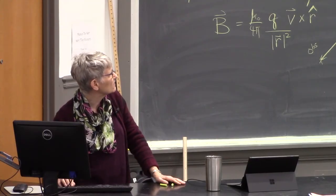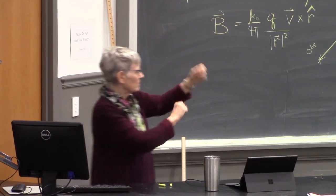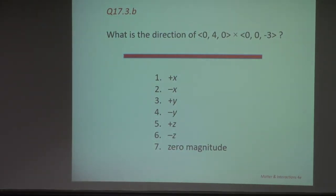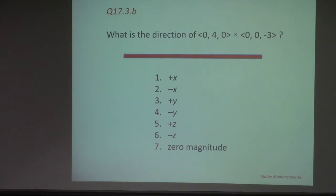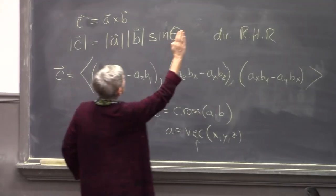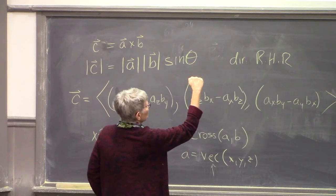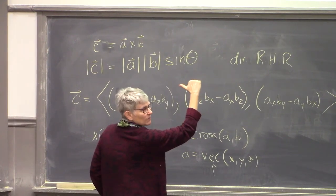Here's the inverse: (0, 4, 0) × (0, 0, −3). Figure it out with your hand. The first vector is in the plus y direction, and you curl fingers toward the negative z direction — my thumb sticks out in the negative x direction. So it's negative x. And if you're right-handed, remember to put your pencil down before you do this.